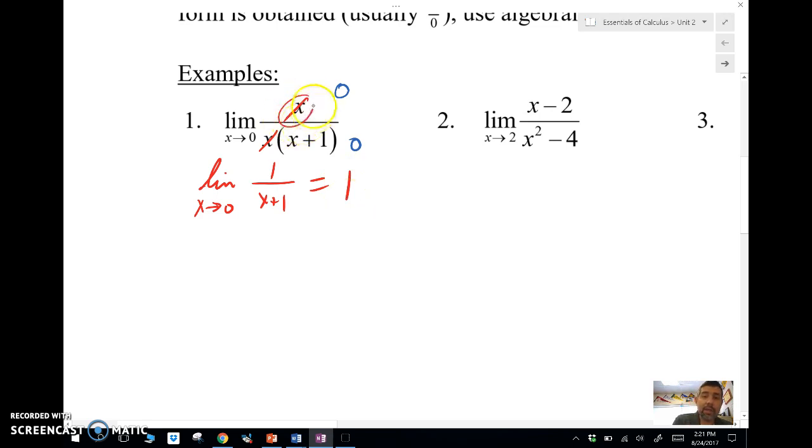Any time these cancel out, we know from a previous class that when this simplifies out, we're going to end up with a hole in the graph. This is a hole at the point zero comma one. How do I know it's one? I plug in zero here and I get the limit right there is one.